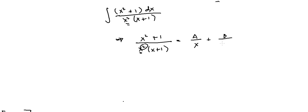Since we are in a proper fraction, we can use partial fractions. We can now convert this into repeated linear form: since we have x raised to 2, we have A over x raised to 1 plus B over x raised to 2, and for the remaining factor we add C over x plus 1.